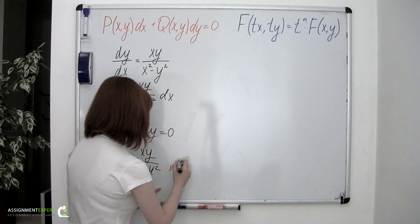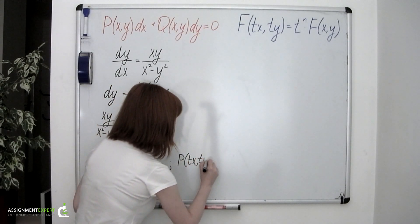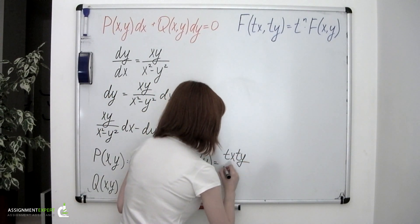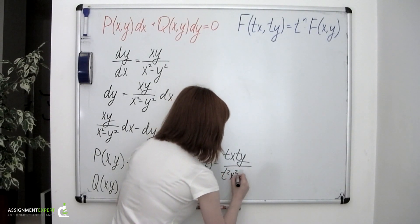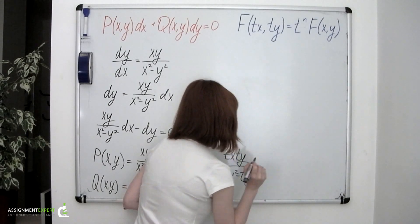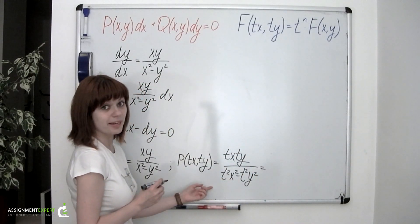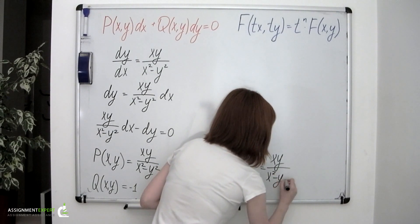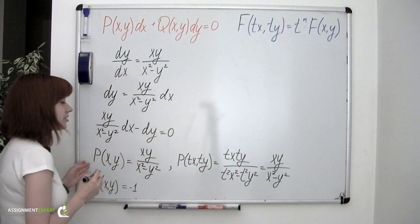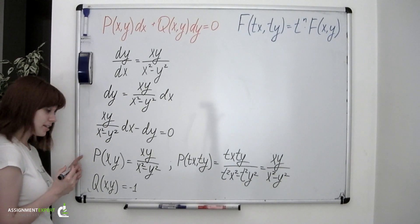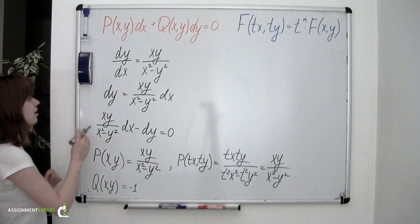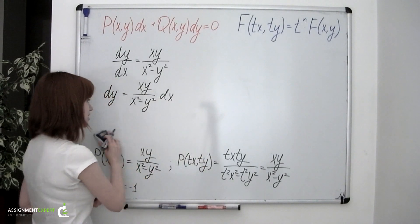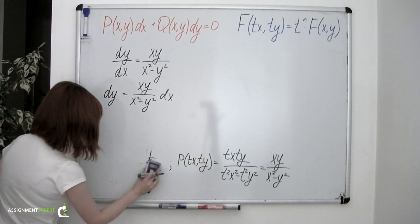Let's see. P of tx and ty equals tx times ty over t squared x squared minus t squared y squared. Obviously we can divide the top and the bottom by t squared, and we obtain xy over x squared minus y squared. We can see that the P function is homogeneous of degree 0, and so is the Q function.